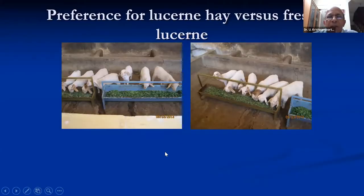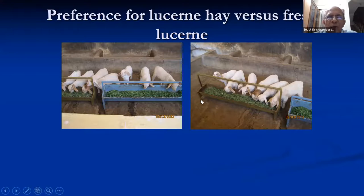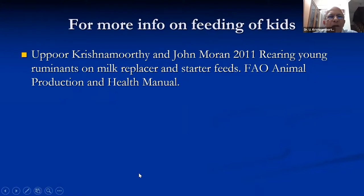Here is a picture showing the difference — for dry vetch and dried rye grass. The lambs tried to smell the vetch and all moved to the dried rye grass. This led us to believe that they may prefer dried grasses or hay in the early stages. We may need more studies to see what the differences are. For more information on feeding kids, you can refer to these publications — 'Rearing Walking Ruminants' or 'Milk Replacer and Starter Feeds,' available freely on the FAO website.